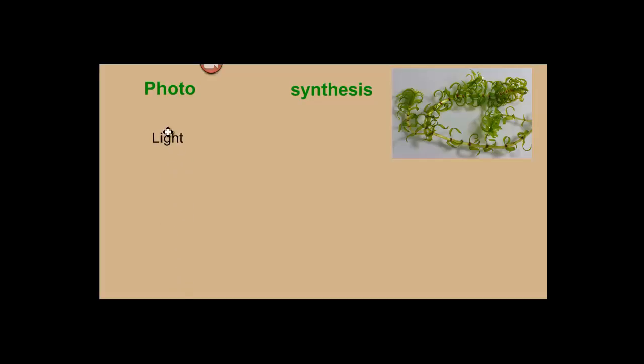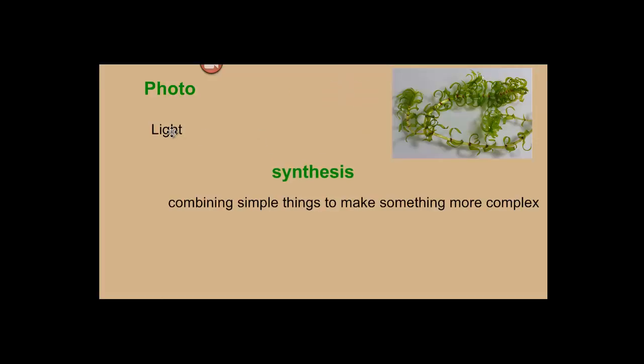Notice that by separating the word you can find the definition. So photo means light, and synthesis means to combine something that is simple to make something that is more complex. So by combining things that are simple, you make them more complex using light.